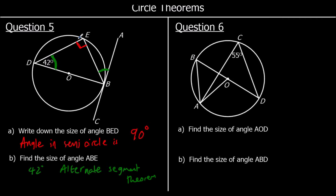We've got a chord meeting a tangent, so any angle that comes from this chord will be equal to the angle made by the chord and the tangent. We could have also used angles in a triangle, then subtracted from 90 degrees because the tangent meets a radius at 90 degrees — and we would have got the same answer.